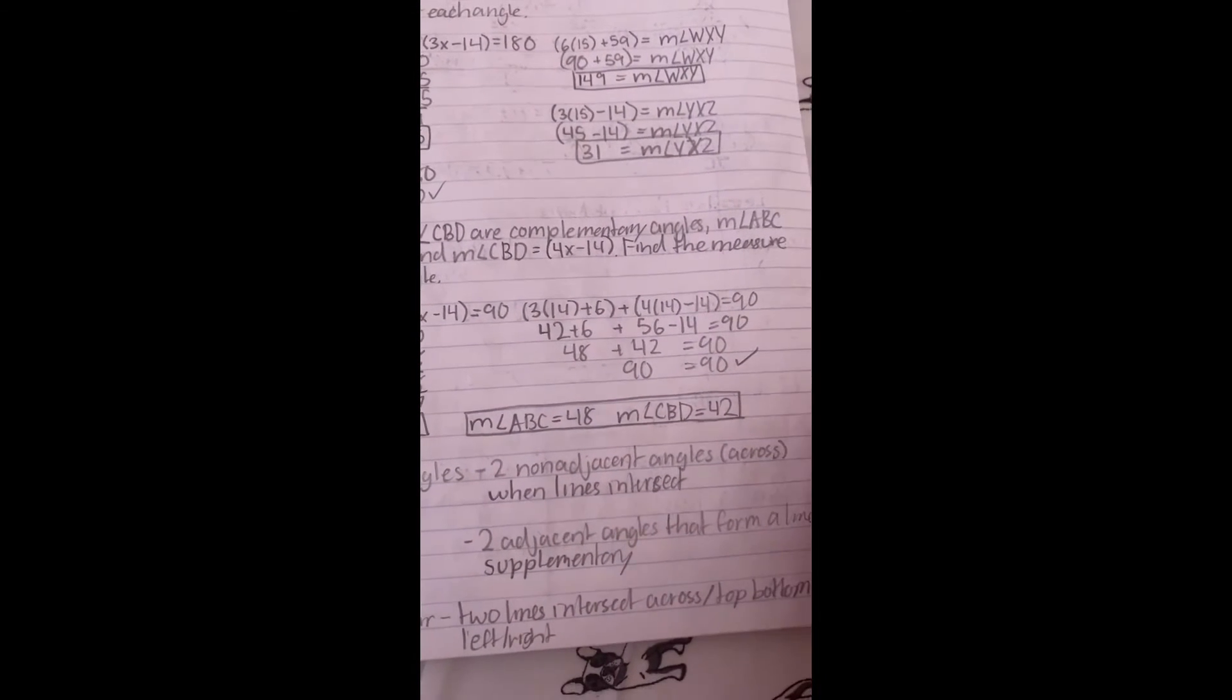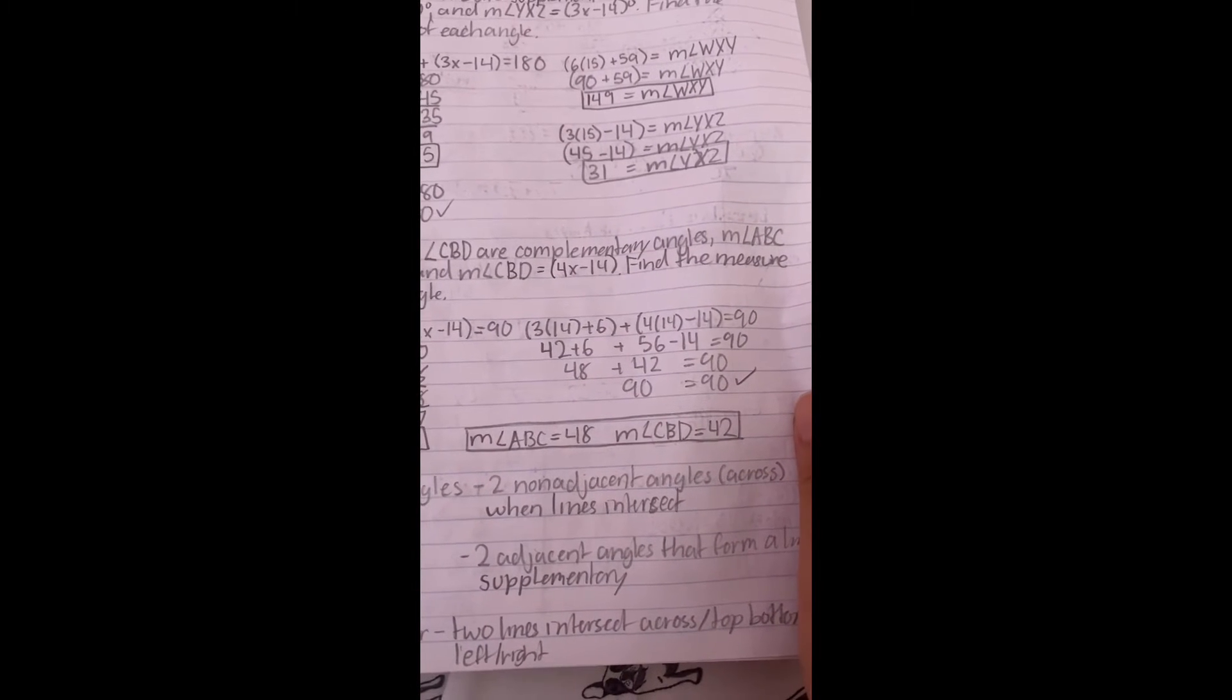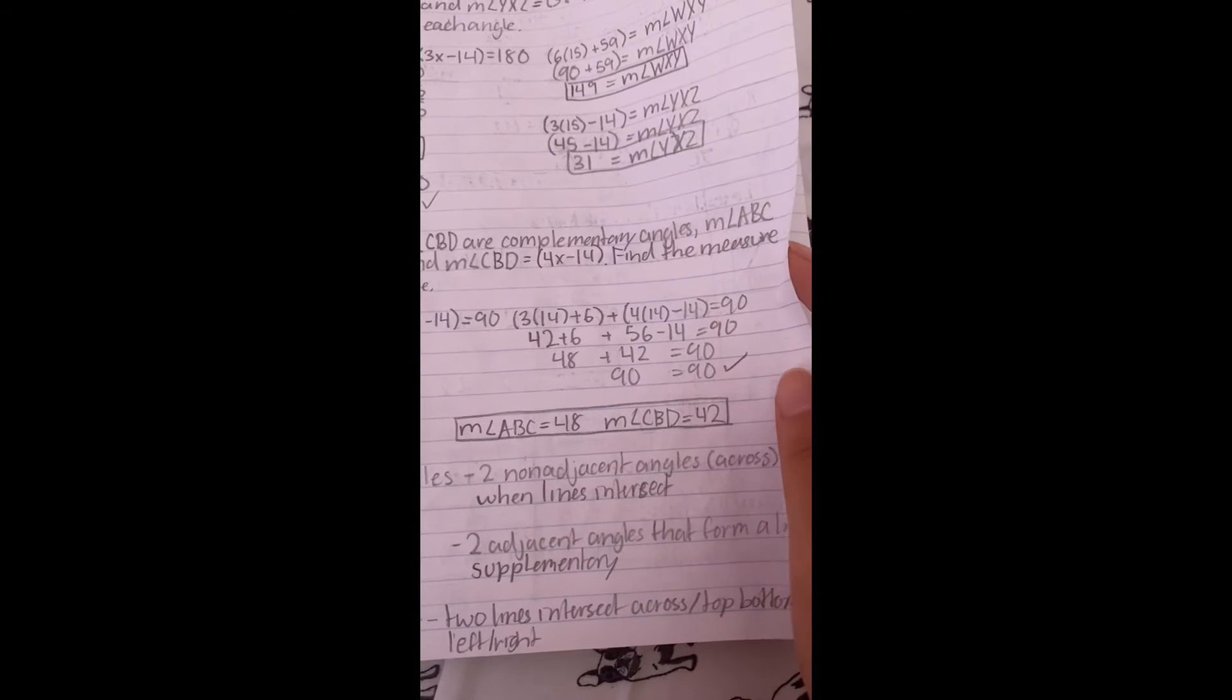Plug it back in. 3 multiplied by 14 is 42 plus 6 is 48, and 4 multiplied by 14 is 56 minus 14 which is 42. And they both together equal 90.